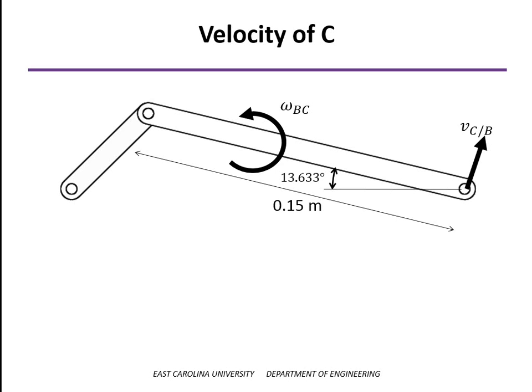Now we move on to point C. To find the velocity of point C, since we know the velocity of point B now, we can use the relative velocity equation.